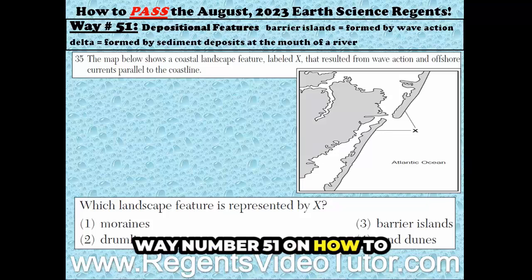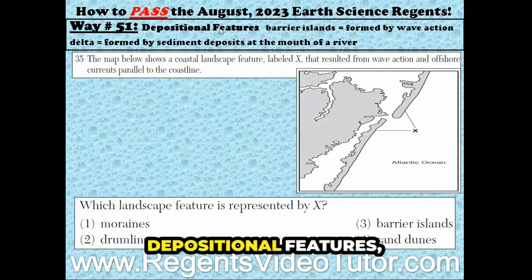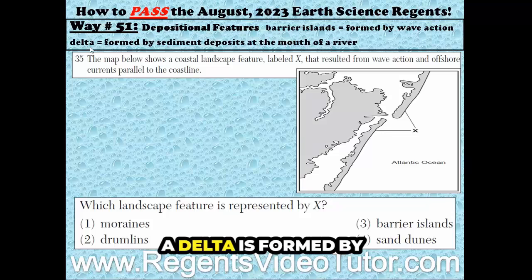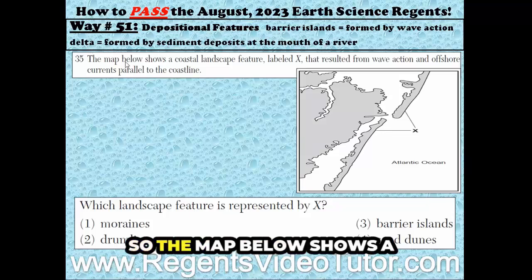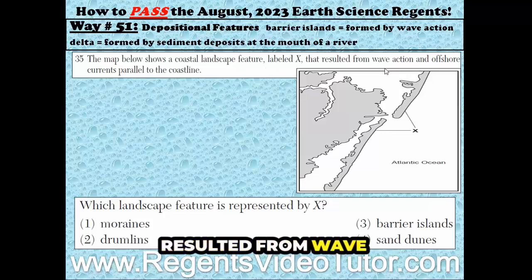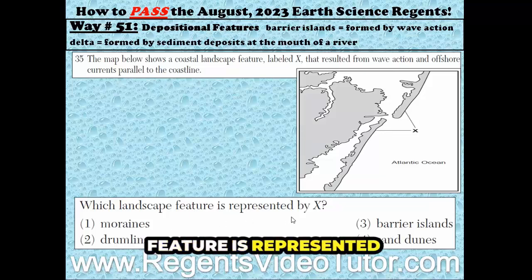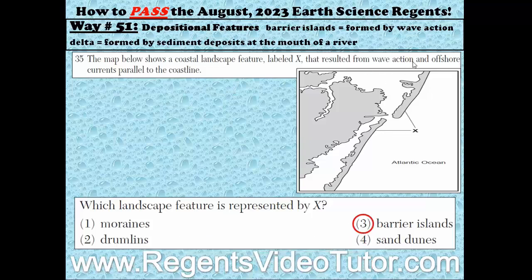Way number 51 on how to pass the August 2023 Earth Science Regents. Depositional features such as barrier islands are formed by wave action, and a delta is formed by sediment deposits at the mouth of a river. The map below shows a coastal landscape feature labeled X that resulted from wave action and offshore currents parallel to the coastline. Which landscape feature is represented by X? Because they said wave action, you're going to go with barrier islands.